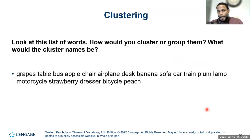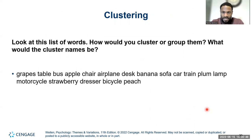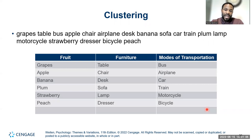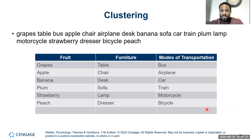Here's a clustering exercise: given words like grapes, table, bus, apple, chair, airplane, desk, banana — how would you cluster them? You might group them as fruit (grapes, plums, peaches), furniture (tables, chairs, sofas, lamps), and modes of transportation (bus, airplane, car, train, motorcycle). Clustering is a natural process we do more often than we think.